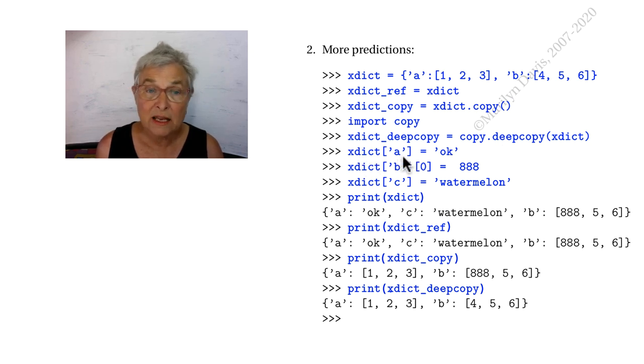So, xDict of the 'a' key, we're now having it just be the string 'ok'. The 'b' key, we're using it to get to the zero-th element and put in 888. And we're putting in a new key-value pair, 'c' with 'watermelon'. Now, that all happened to xDict.